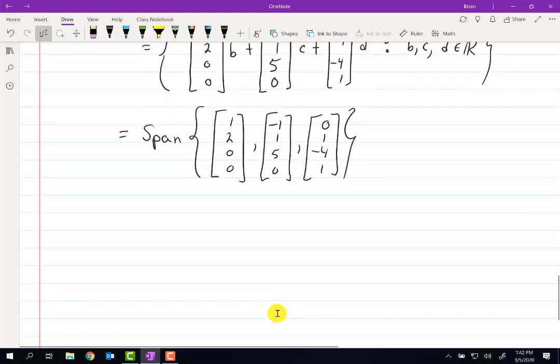So now what we have then is this will equal the column space of a matrix if the matrix is equal to, well, a 4 by 3 matrix with exactly these columns.